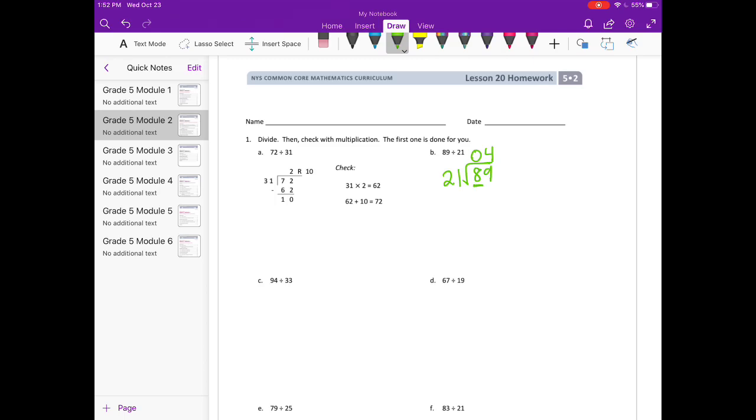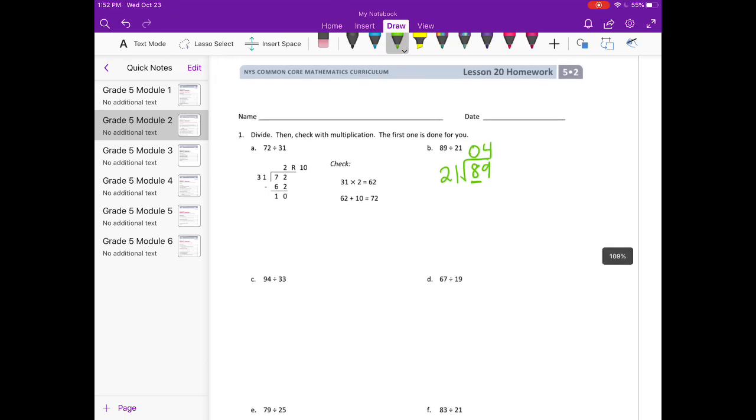So 4 times 21 is 84. If I subtract, I have 5 left. There's nothing to bring down, so my answer is 4 remainder 5. And then to check, I would do 21 times 4 equals 84 plus our remainder of 5. 84 plus 5 is equal to 89.